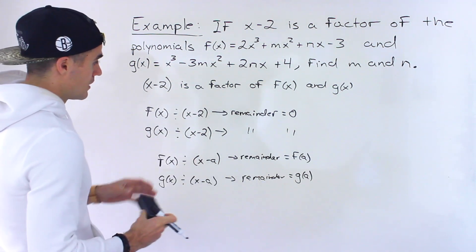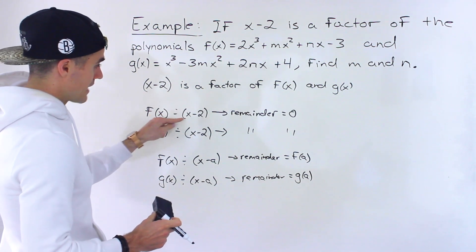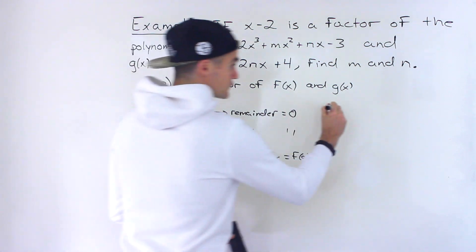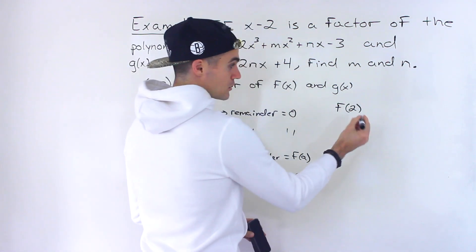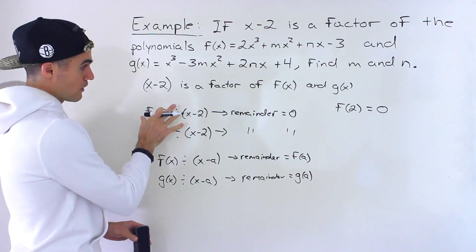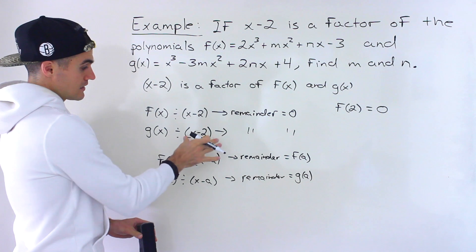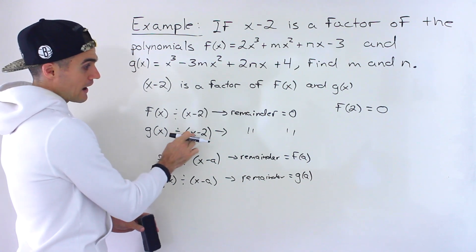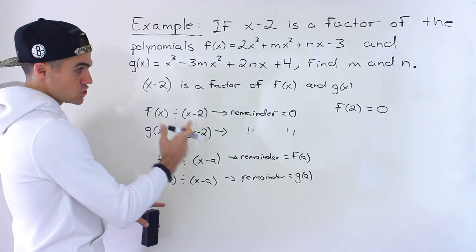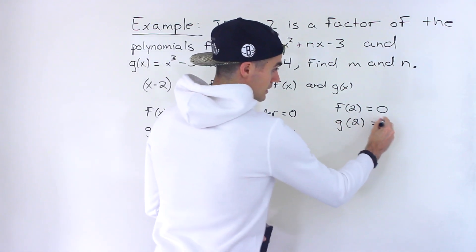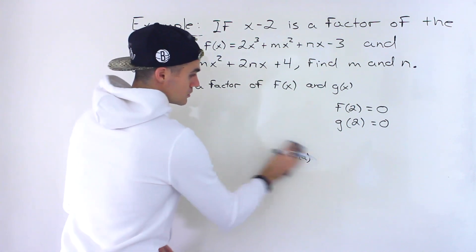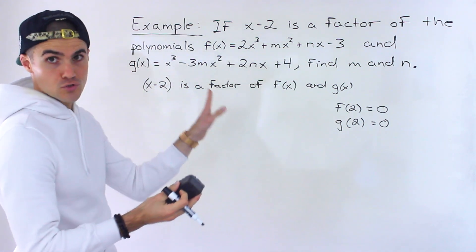So if we combine these together: because x minus 2 is a factor, the remainder is 0. We also know that if we divide f of x by x minus 2, f of 2 is going to be the remainder, and we know the remainder is 0. So we're combining both the remainder theorem and the factor theorem. Same thing with g of x — x minus 2 is a factor of g of x, so the remainder when we divide is going to be 0, and by the remainder theorem we know the remainder is g of 2, so g of 2 equals 0.